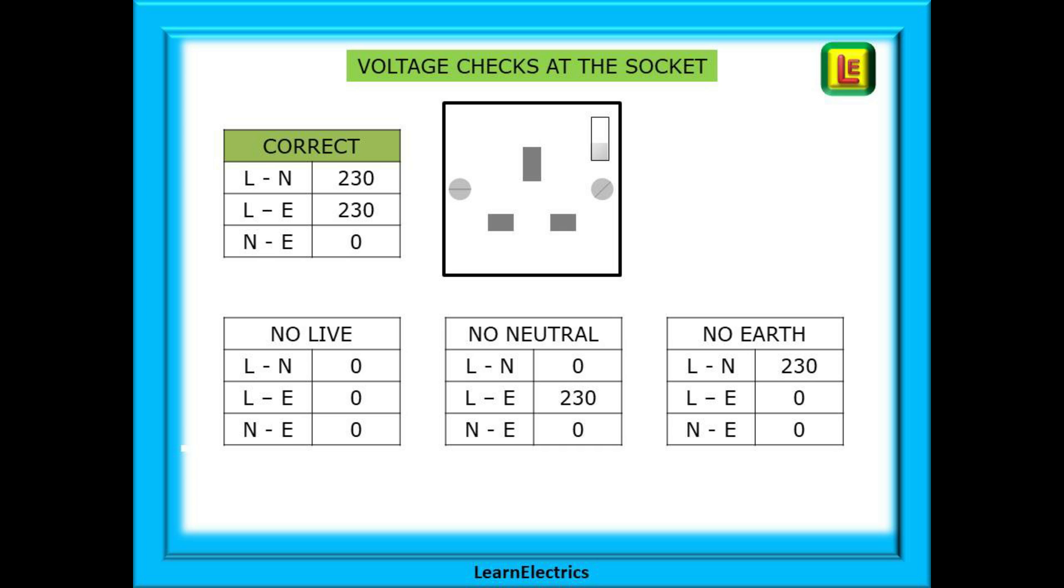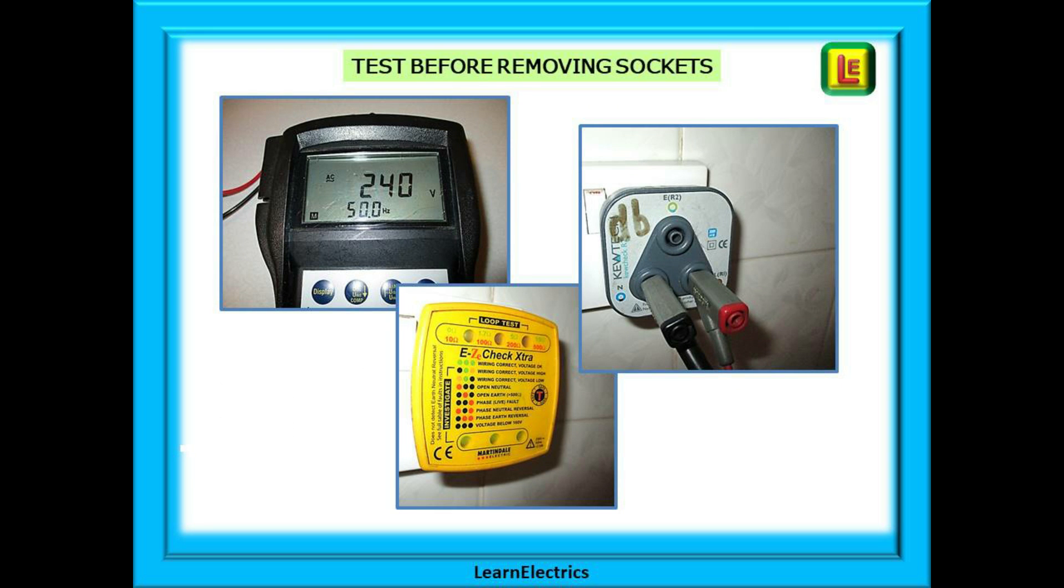This slide shows what we would see if one of the conductors was not connected to the socket. First shown is no live or phase, then no neutral, and now no earth. We've also shown the correct table again for comparison. You can use either a test meter with a breakout plug to check the voltages or a decent socket tester. Whichever you choose, know your equipment.